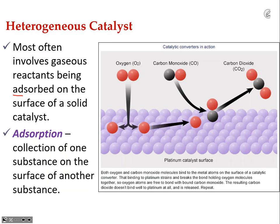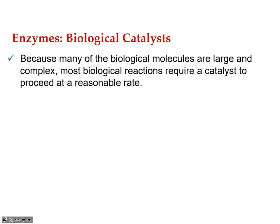A classic example is catalytic converters in vehicles: the platinum catalyst is a solid surface where gaseous oxygen reacts with poisonous carbon monoxide. The CO is converted to less toxic CO₂. While CO₂ is a greenhouse gas with its own environmental concerns, it is not toxic to breathe, unlike carbon monoxide. This is an example of adsorption with a solid heterogeneous catalyst.